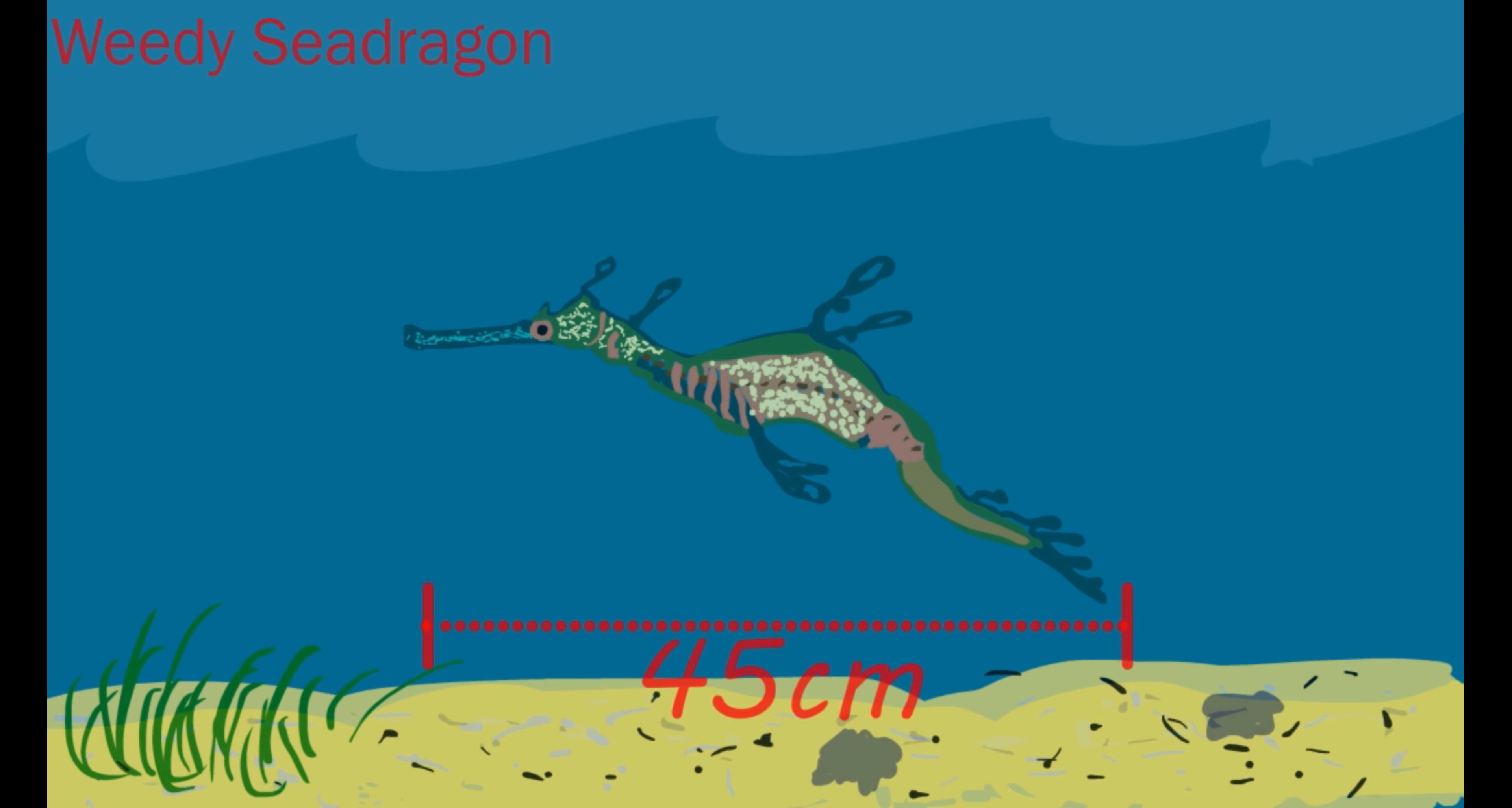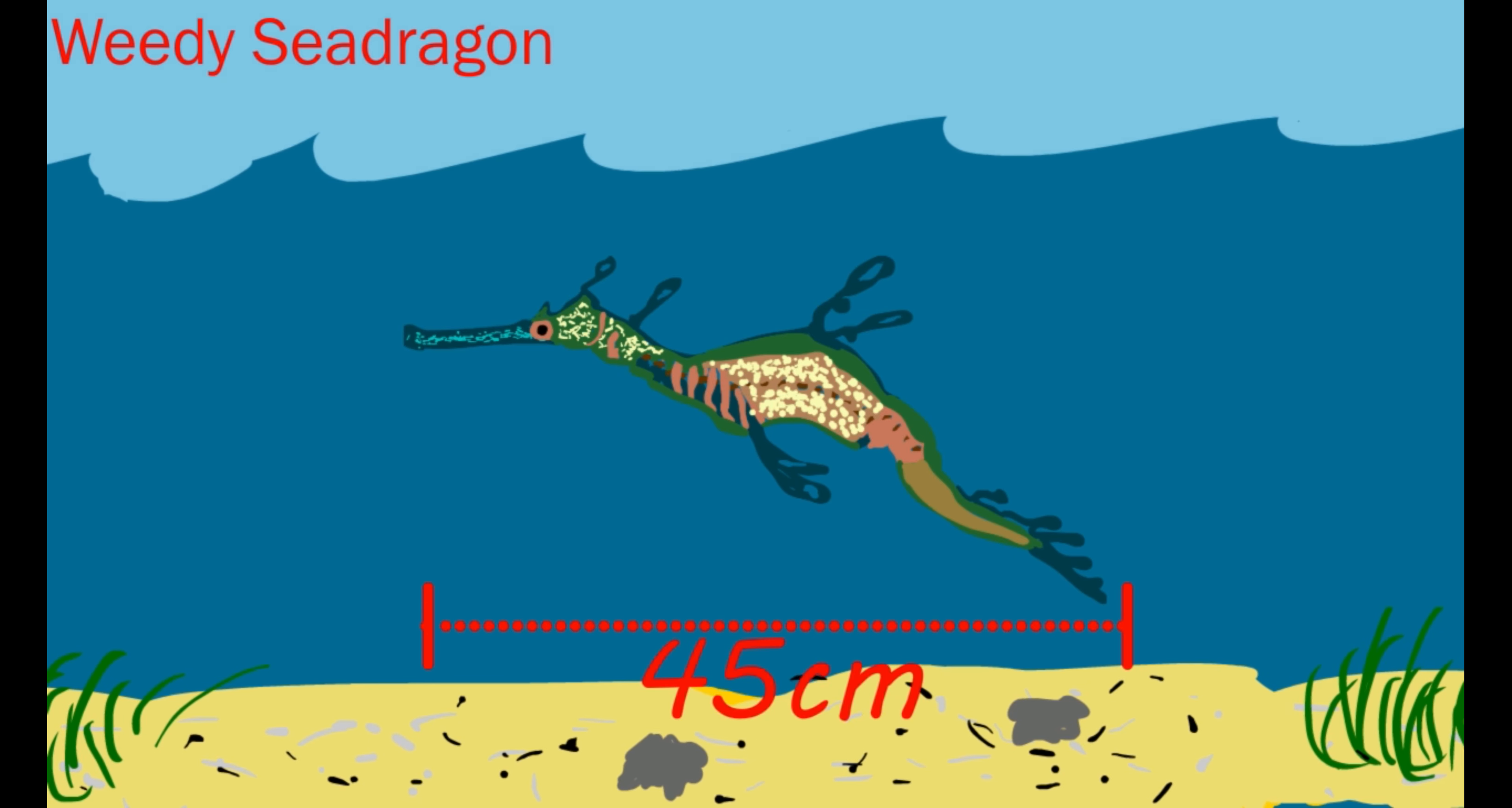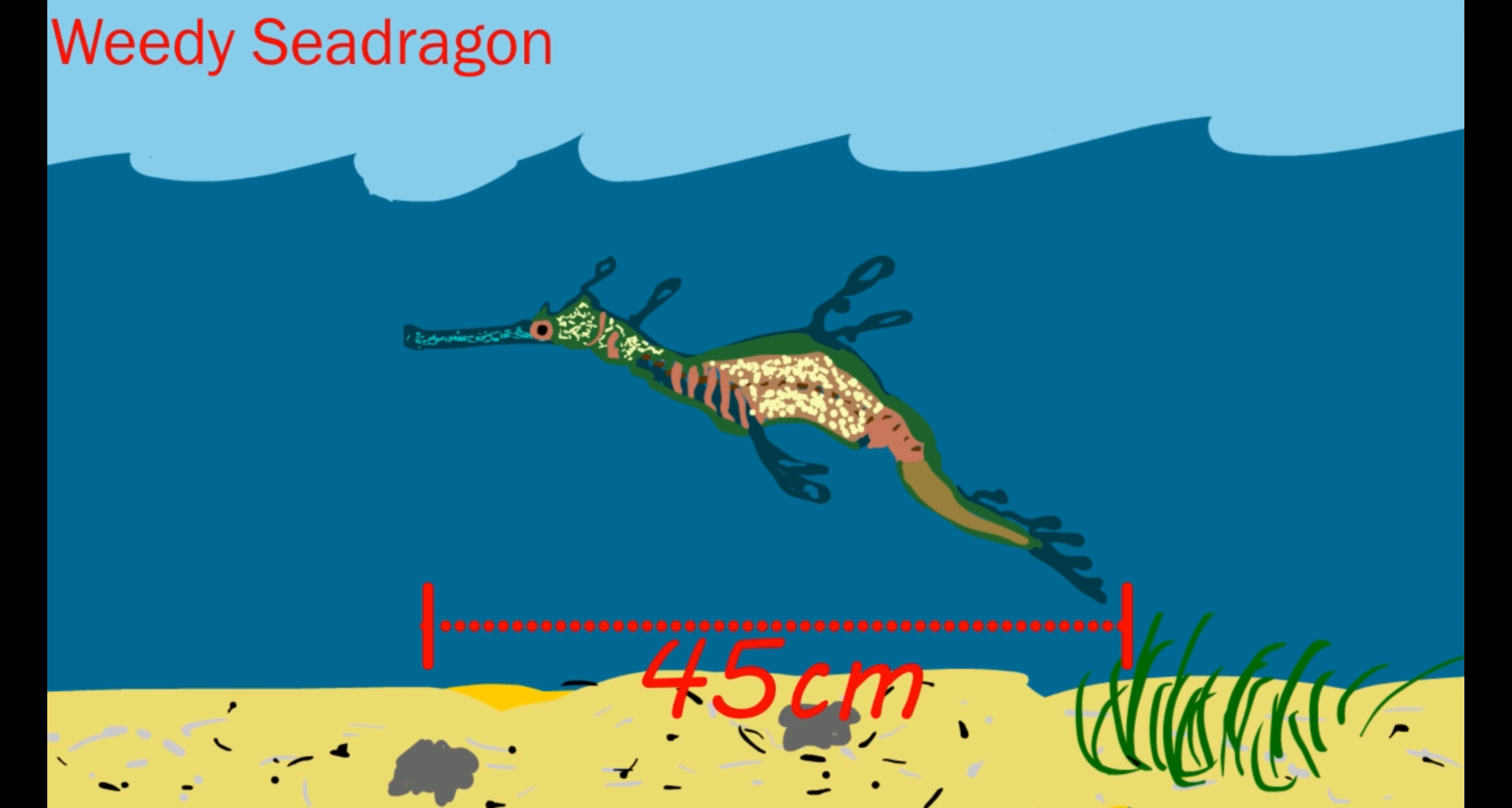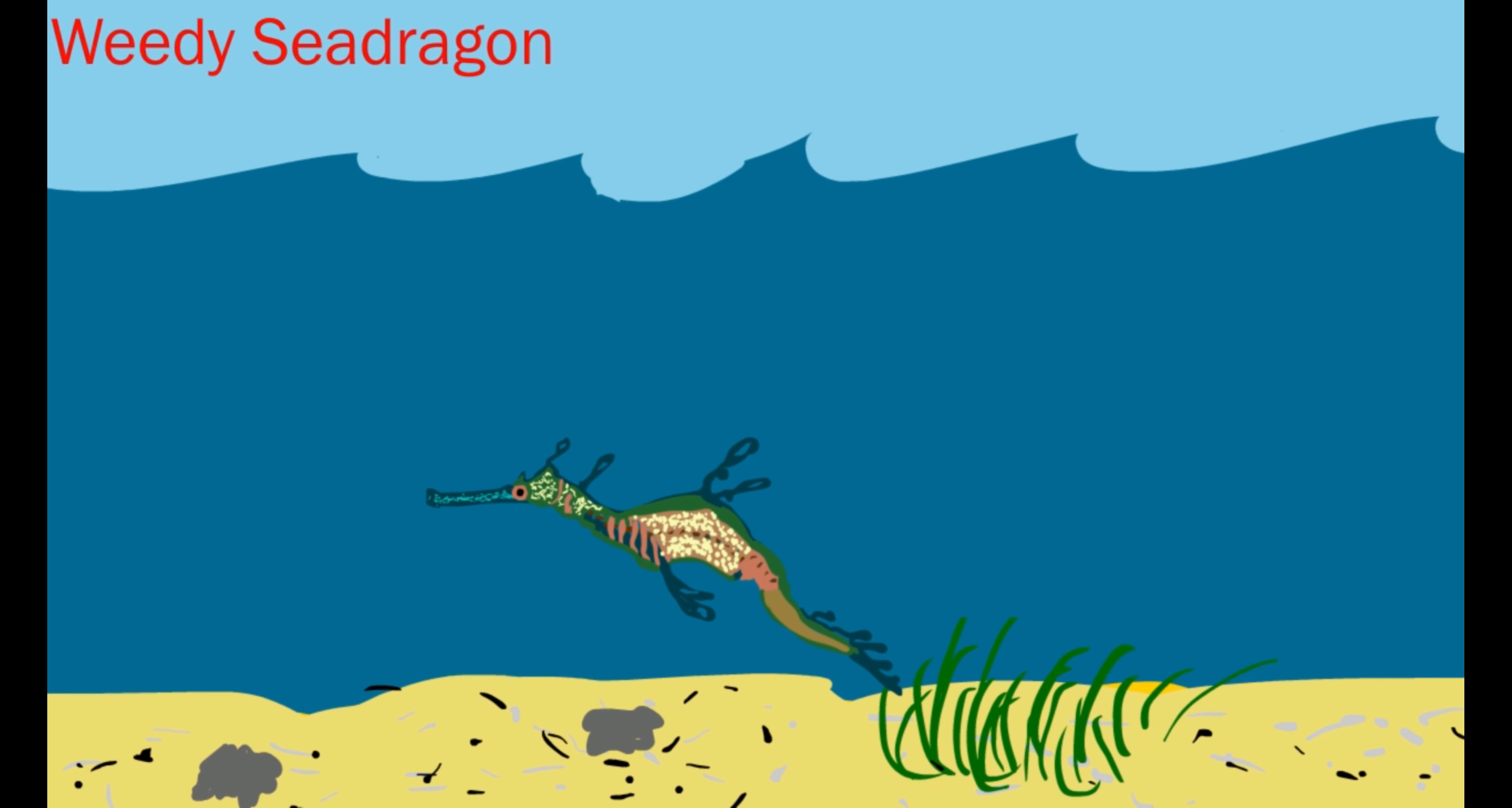Weedy sea dragons really appreciate the ecosystem engineers. Weedy sea dragons live all around the coastal waters of southern Australia and call Port Phillip Bay home. They are slender and about 45 centimeters long or less. They use the long fin on their back and the small fins on their sides for balance. They like to eat small shrimp, fish, and plankton.